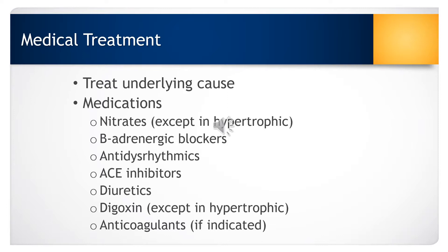The first course of treatment will be to treat the underlying cause. Otherwise, medications used for both dilated and hypertrophic cardiomyopathy — except where noted — include beta blockers, anti-dysrhythmics, ACE inhibitors, and diuretics. Nitrates and digoxin will be used only in dilated cardiomyopathy. Anticoagulants will be used if indicated for patients with valvular disease, atrial fibrillation, or atrial flutter.